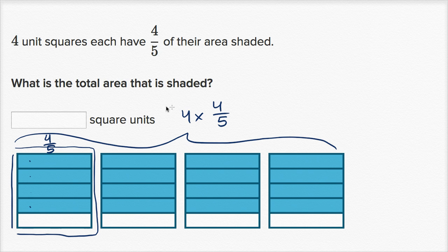Well, what is this going to be? What is the total area that is shaded? I encourage you to pause the video and try to think about it. Well, each of these bars — this right over here — that is a fifth. If you took a whole and split it into five equal sections, one of those sections is going to be a fifth. So how many fifths are shaded in?